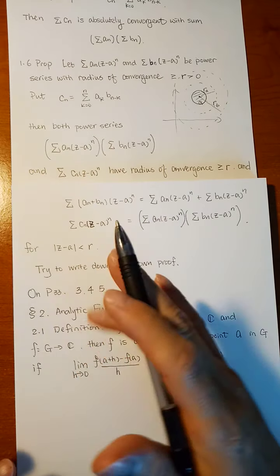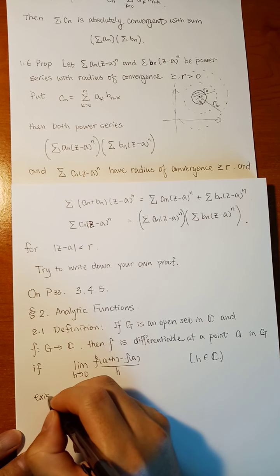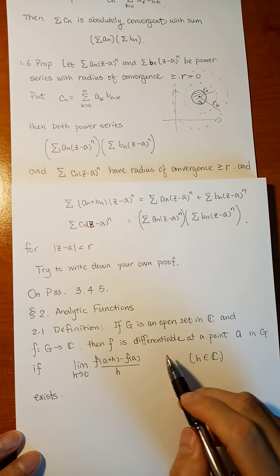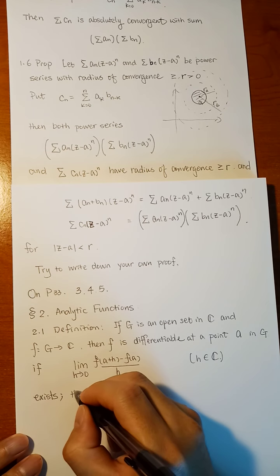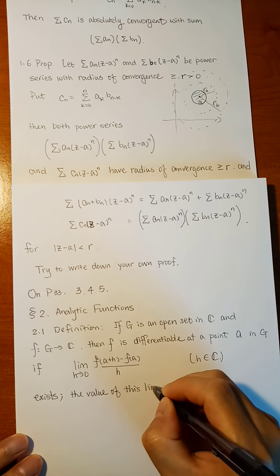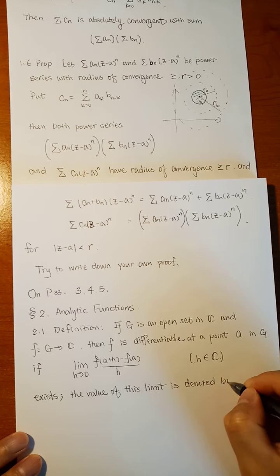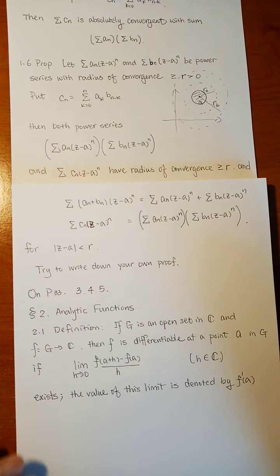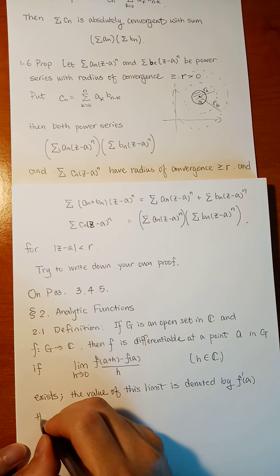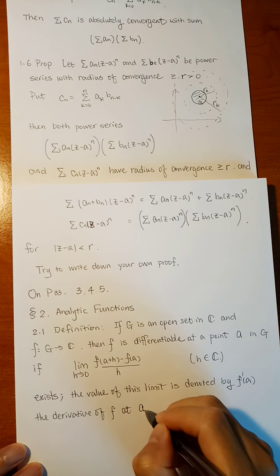H can approach 0 from whatever direction with whatever trace — it's not just a single segment. If this limit exists, we say the function is differentiable, and the value of this limit is denoted F'(A), the derivative of F at point A.